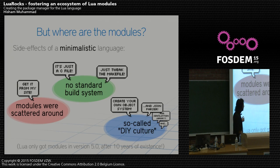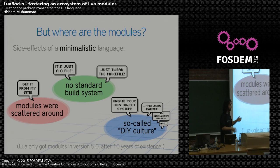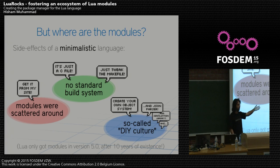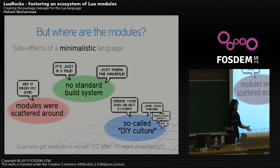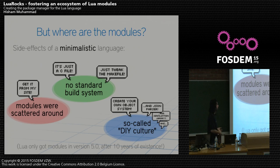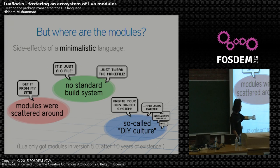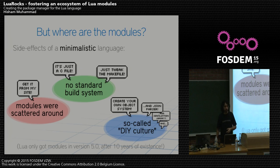So every time in the mailing list you'd see, 'go on, create your own little object system based on abstractions for tables and closures.' And you would see people over and over developing their own JSON parser, their own serialization library, their own this, their own that — everyone had their own copy of everything. And in fact, as a side note, Lua only got modules in version 5, after 10 years of existence, because it was mostly only used as an embedded language before.